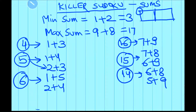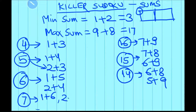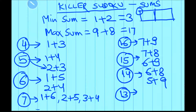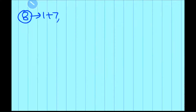For sum 7, there are 3 possible combinations: 1 plus 6, 2 plus 5, and 3 plus 4. Also, for sum 13, there are 3 possible combinations: 4 plus 9, 5 plus 8, and 6 plus 7. For sum 8 also, there are 3 combinations: 1 plus 7, 2 plus 6, and 3 plus 5.